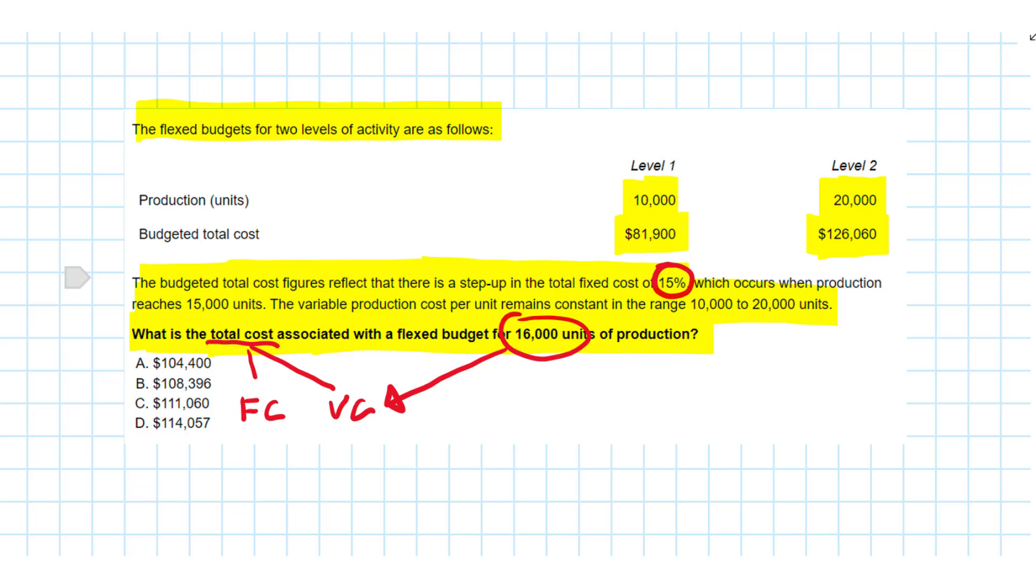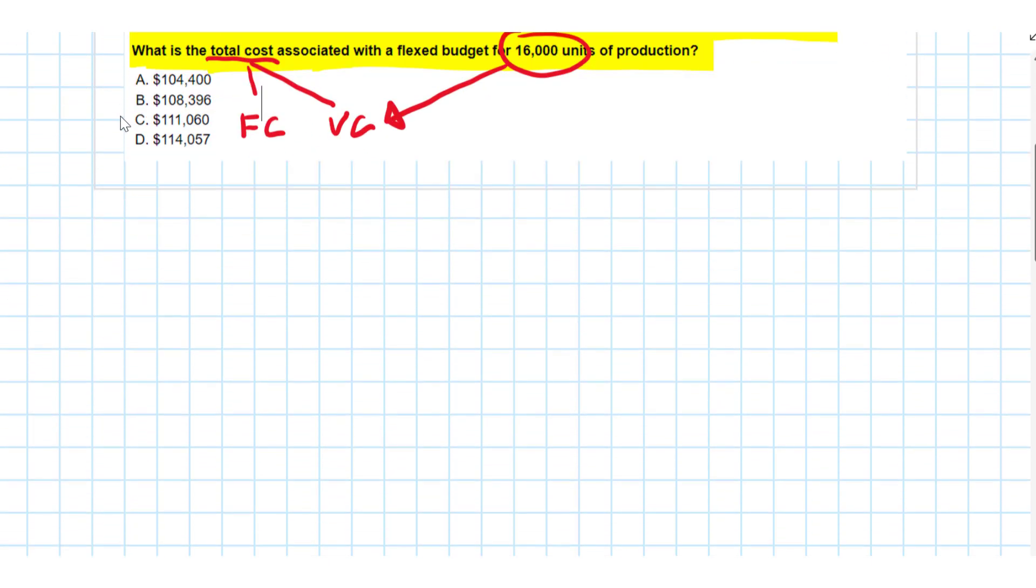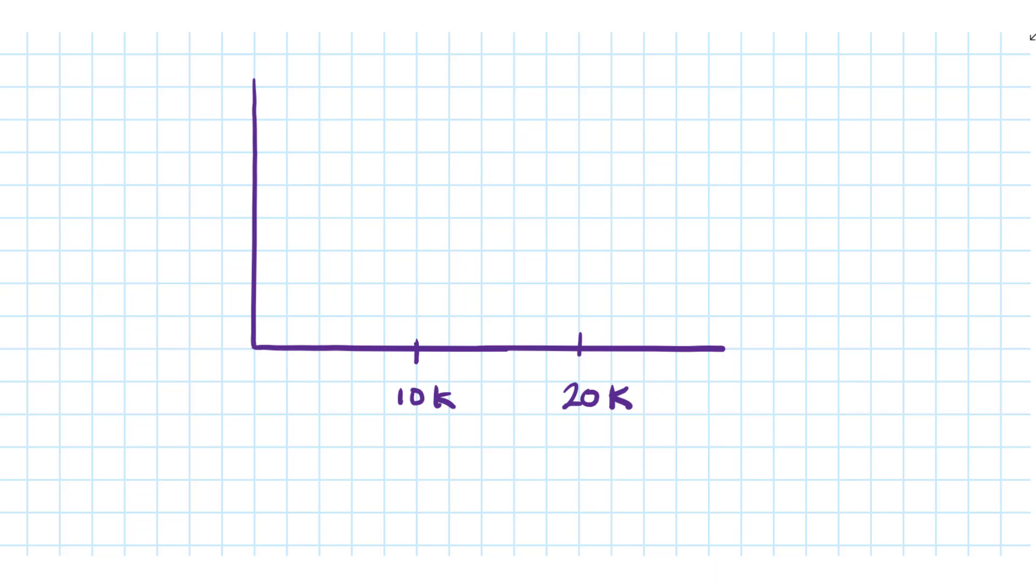Let's graph this to see what's happening. We have two activity levels given to us: 10,000 units and 20,000 units, with corresponding total costs on the y-axis. At 20,000 units it was $126,060, at 10,000 units it was 81,900.